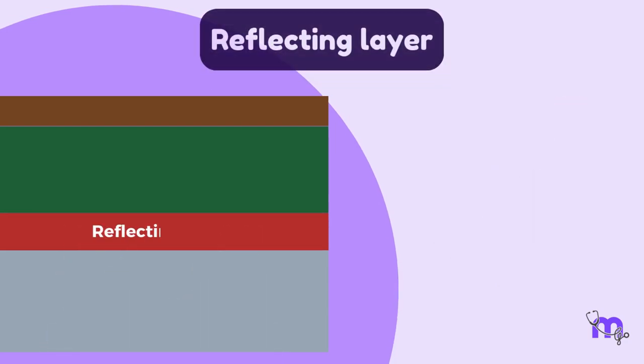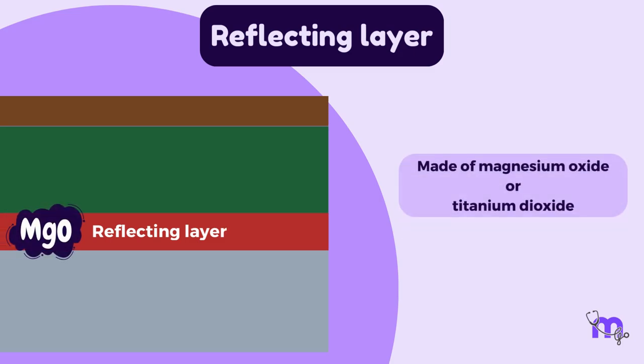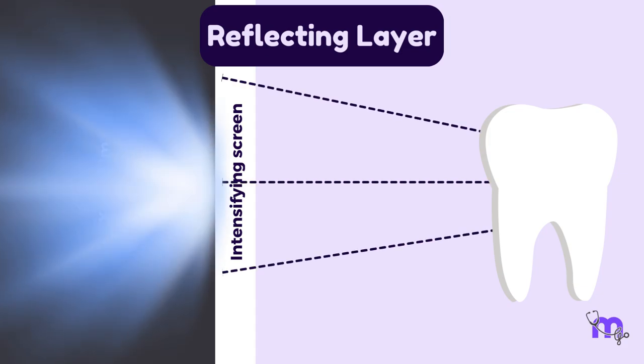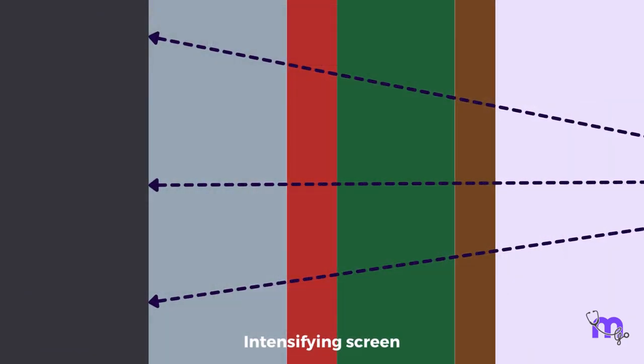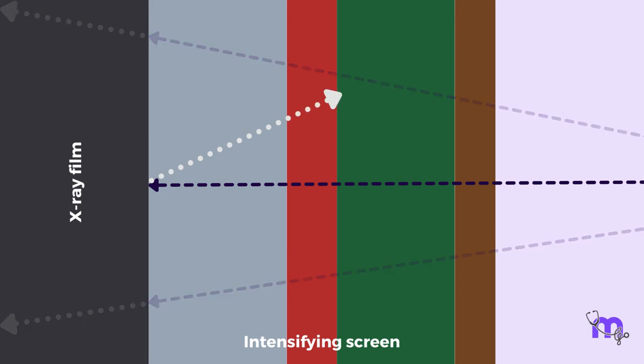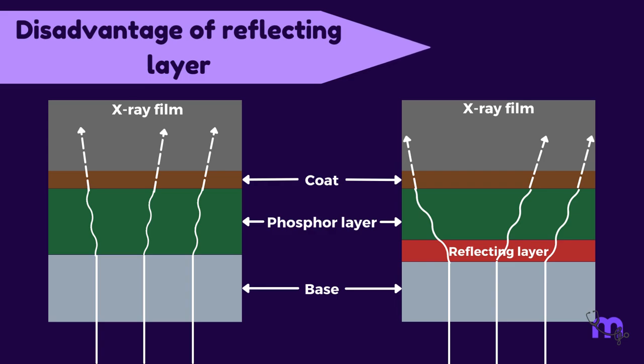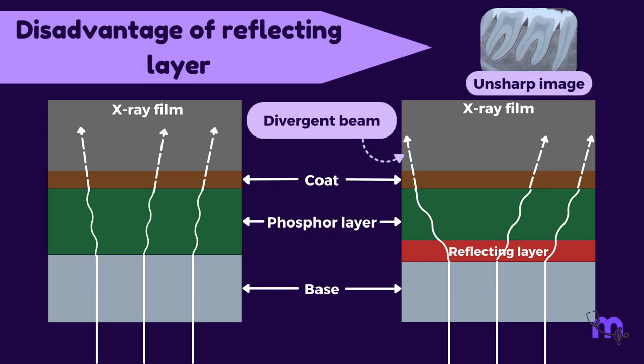Next we have the reflecting layer, made of magnesium oxide or titanium dioxide. Let us discuss its role. We know that the intensifying screen converts X-ray photons to visible light through a phenomenon called fluorescence. Most of this visible light is directed towards the film. However, some of it is directed backwards, away from the film. When this happens, it comes in contact with the reflecting layer, which redirects it back to the film. Although the reflecting layer has a significant role, it has one disadvantage. The light it reflects is more divergent, resulting in an unsharp image.